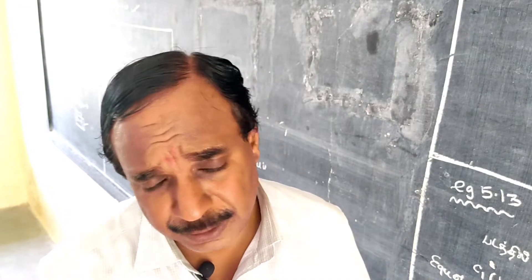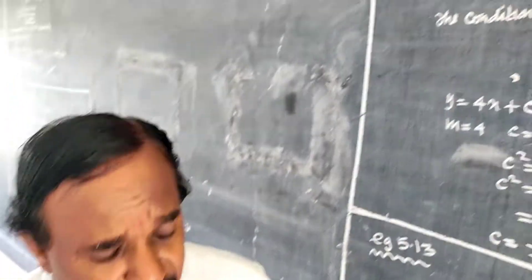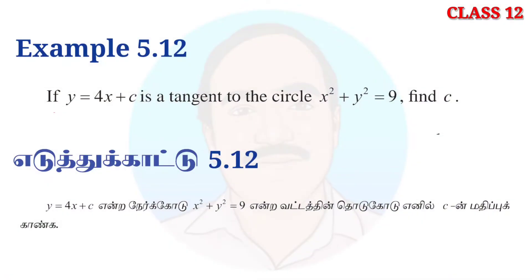Welcome to Example 5.12. If y is equal to 4x plus c is a tangent to the circle x squared plus y squared is equal to 9, find the value of c.